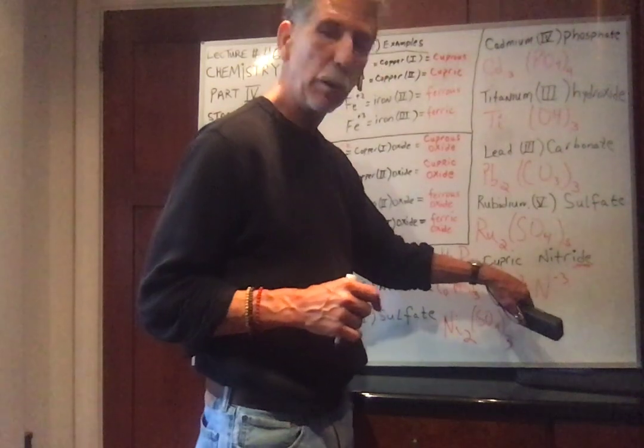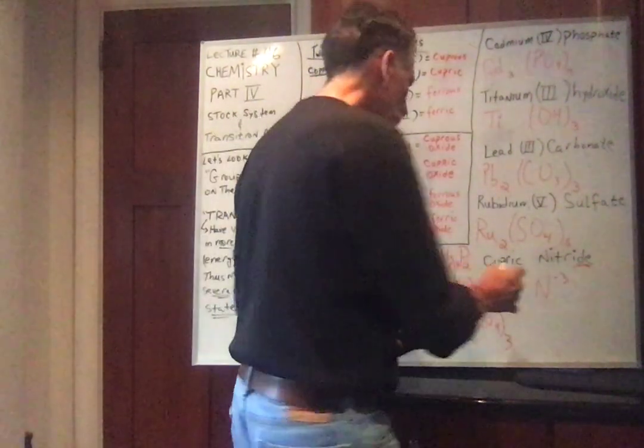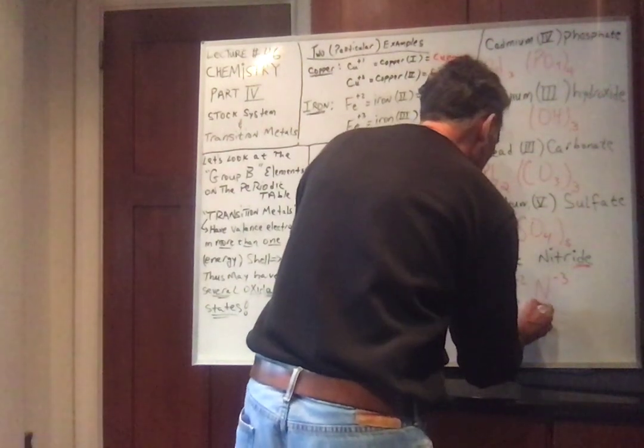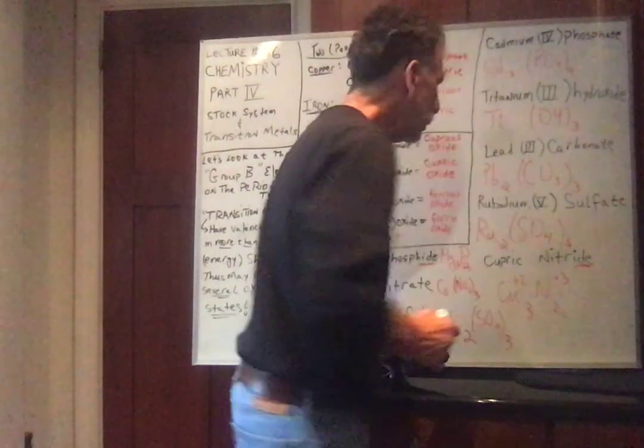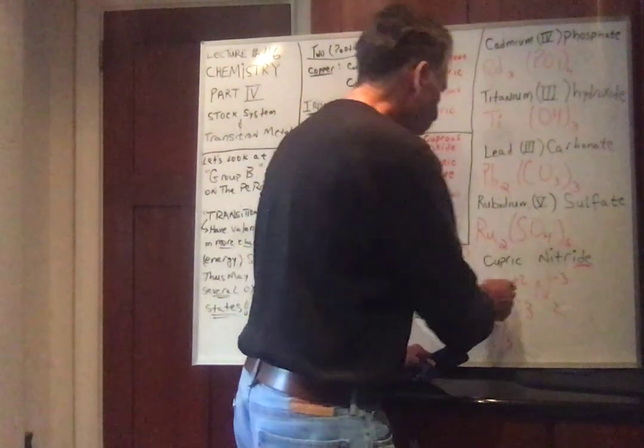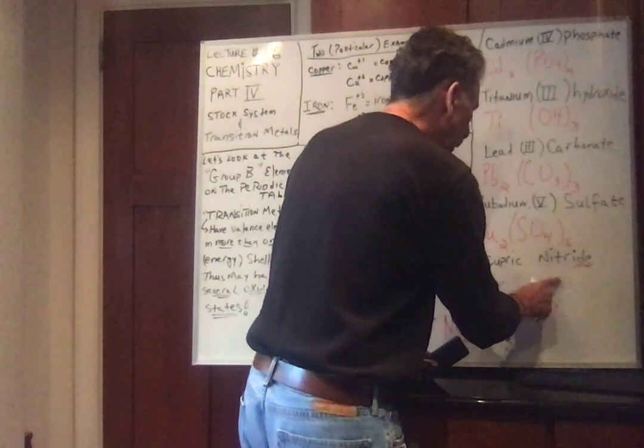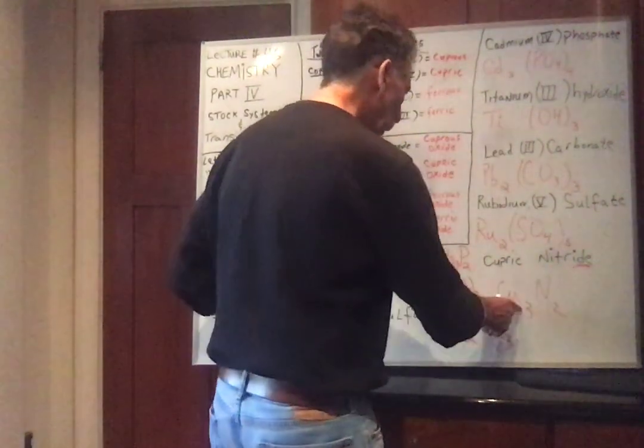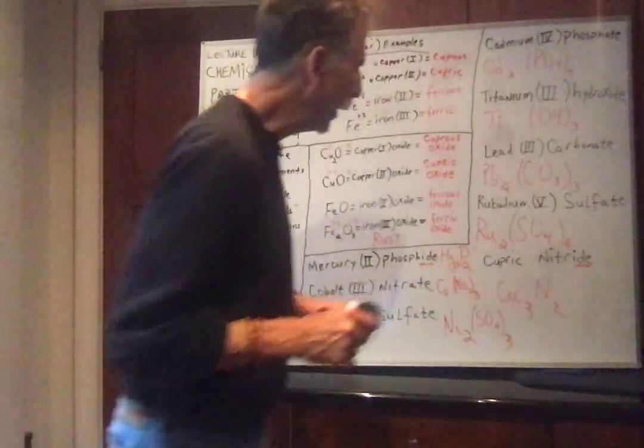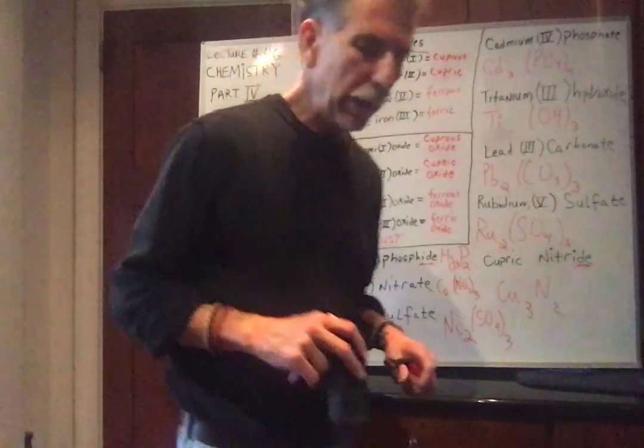Cupric is the plus 2 state. Nitride, nitrogen is in group 5, so it needs 3 electrons. So the common number is 6, 2. So copper gives 6 electrons, nitrogen takes 6 electrons. I can erase the oxidation numbers with my finger as I hold the eraser in this hand because I'm not that bright. And there's the formula for cupric nitride.